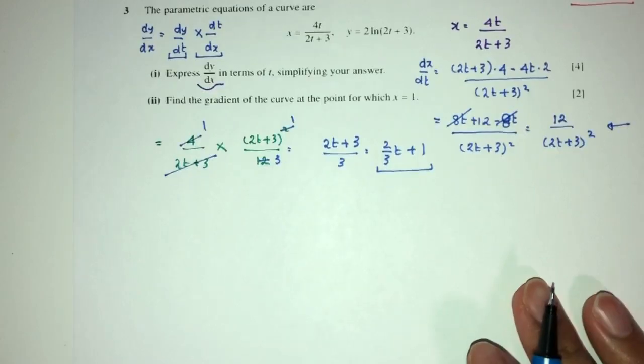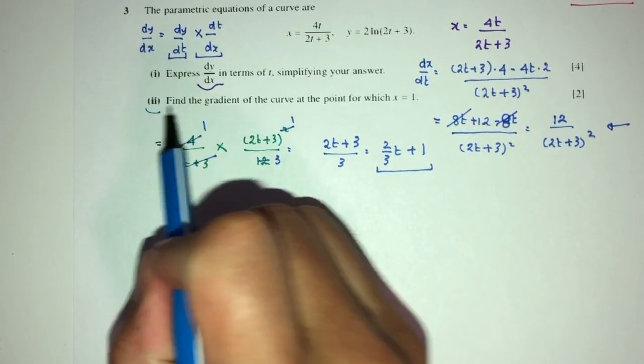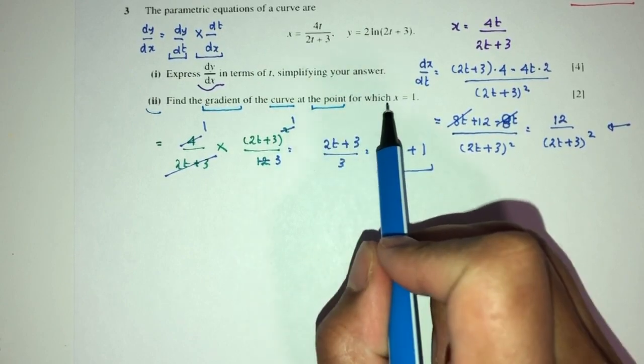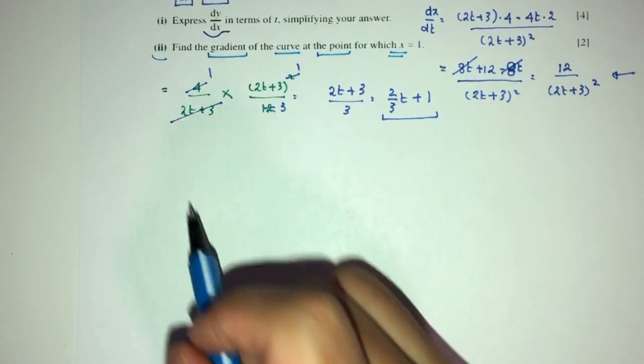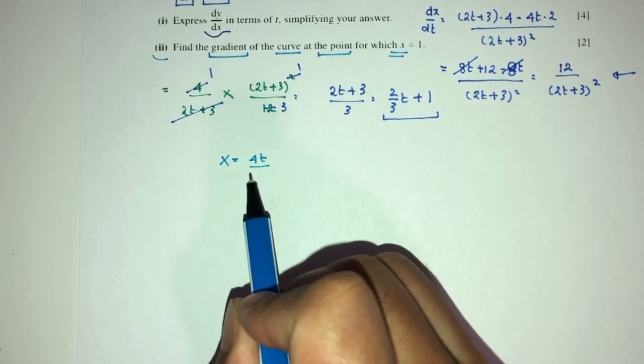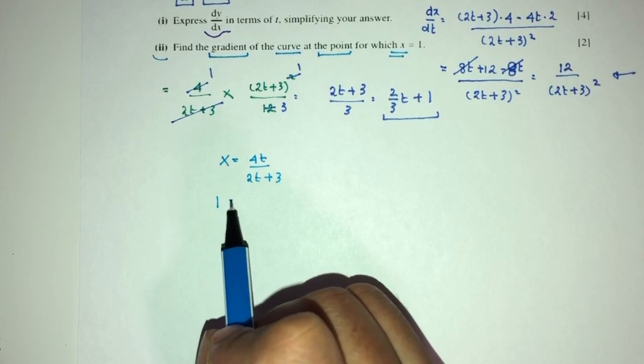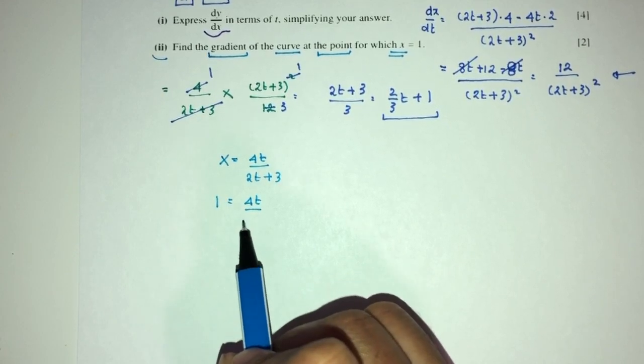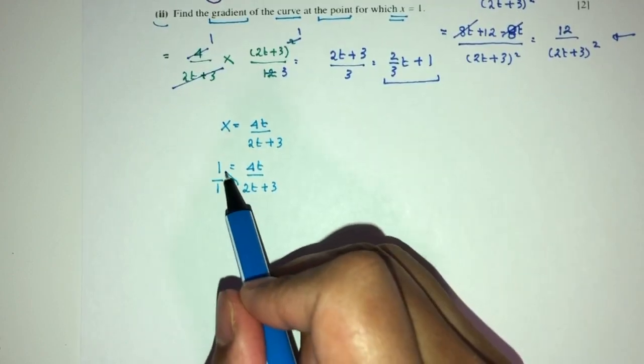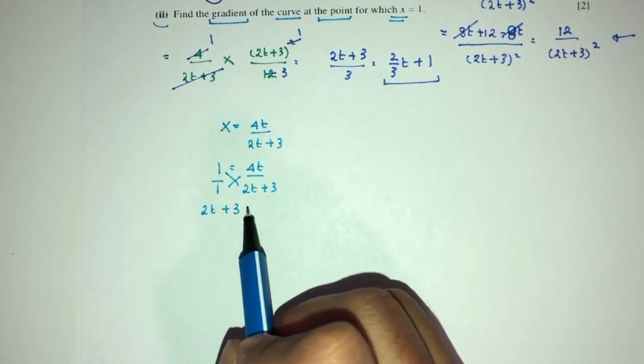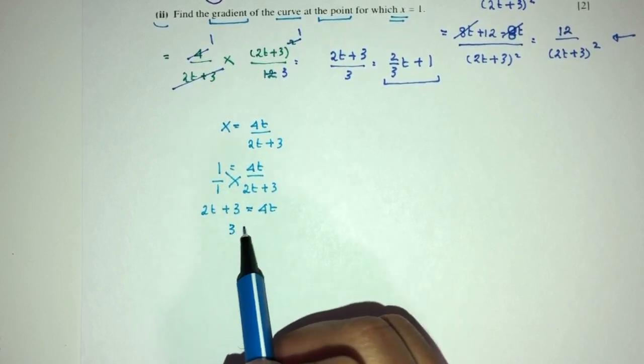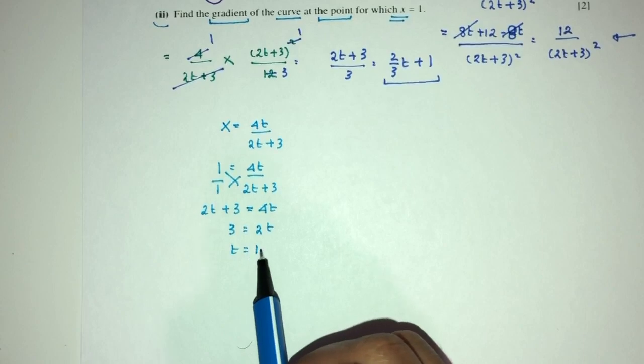This is part one of your question. Now part two, we have to find the gradient of the curve at the point for which x is 1. Now x is given to you by this equation, 4t over (2t + 3). If x is 1, we can find the value of t. By cross multiplication, you will have 2t + 3 = 4t. Send this over here, you will have 3 is equal to 2t, so t will be just 1.5.